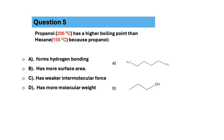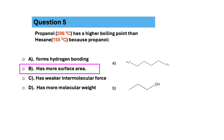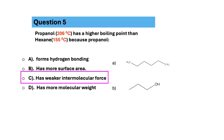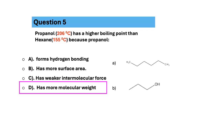Question 5. Propanol has a higher boiling point than hexane because propanol: Choice A forms hydrogen bonding. Choice B has more surface area. Choice C has a weaker intermolecular force. Choice D has more molecular weight.